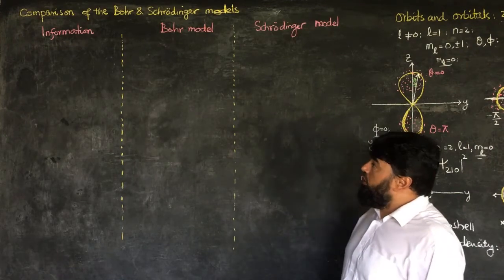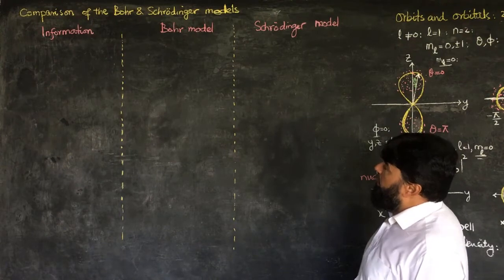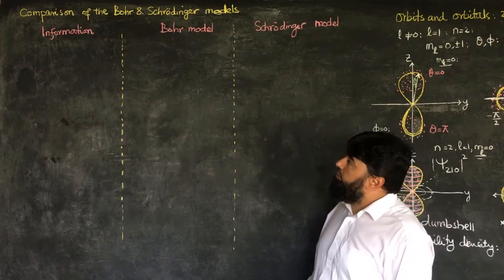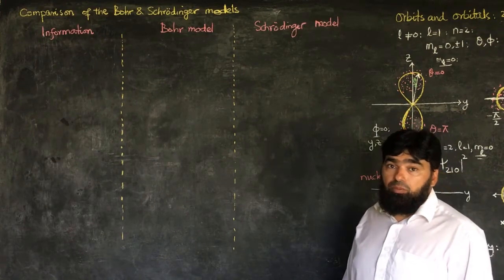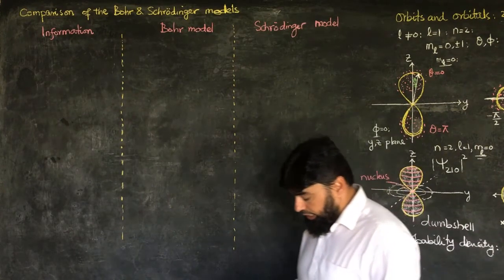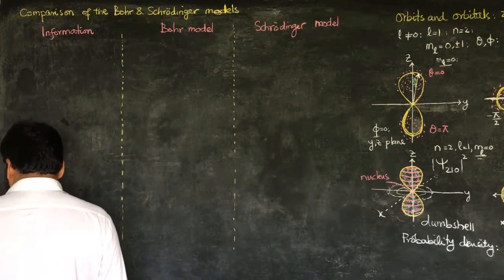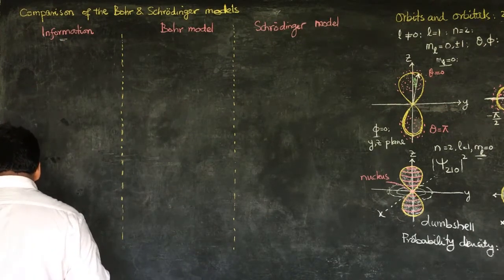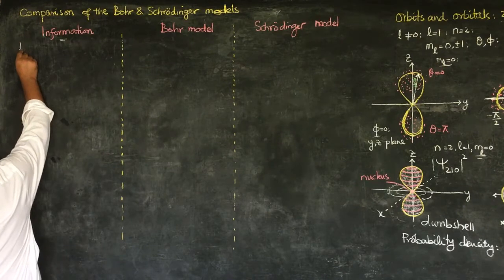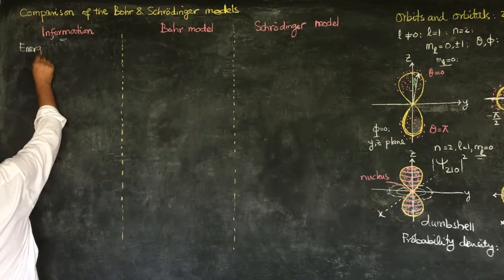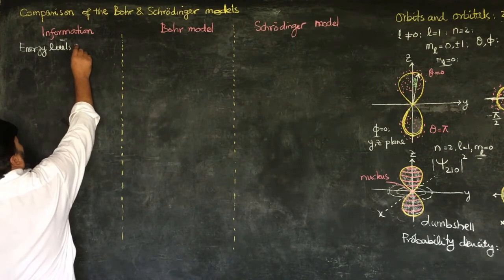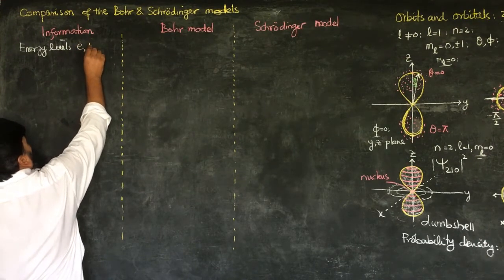Although we have not completed our story of the quantum numbers and the different roles they are playing, for the moment we do a comparative analysis of the Bohr and the Schrödinger models of the hydrogen atom. The very first information that I am going to ask is: what are the energy levels of an electron in the hydrogen atom?